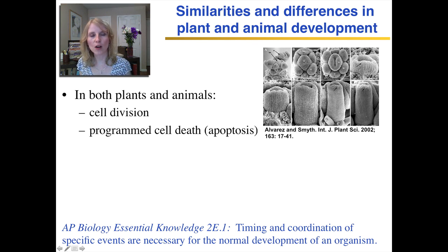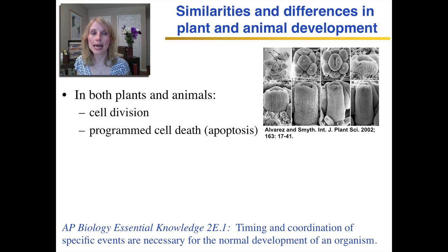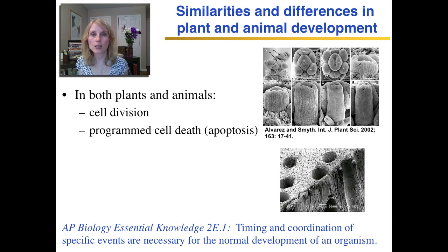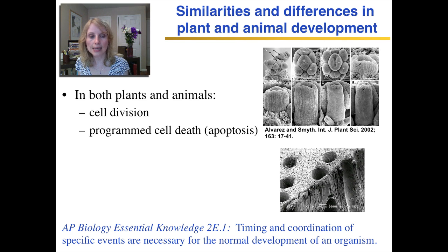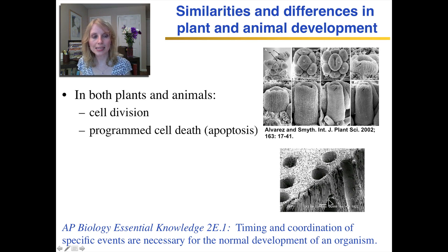Also in both plant and animal development, you have apoptosis, which is programmed cell death, where cells are programmed to die as part of normal development. The best example of that in plants is the development of xylem — the vascular tissue that transports water and minerals through plants. As the xylem cells are maturing, they die leaving behind just the cell wall, and when you connect a number of these dead cells together, they form a nice pipe through which water and minerals can flow pretty efficiently.